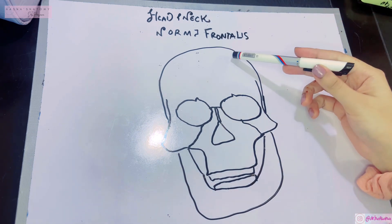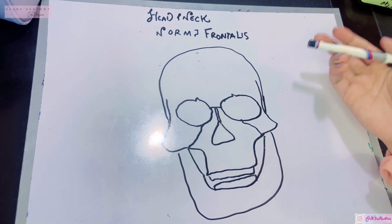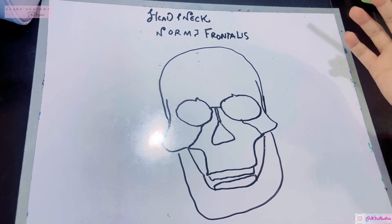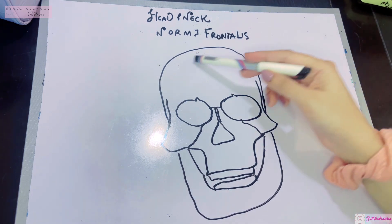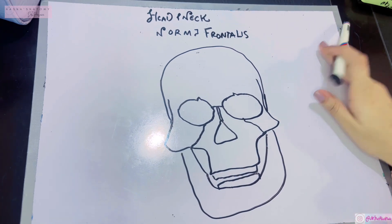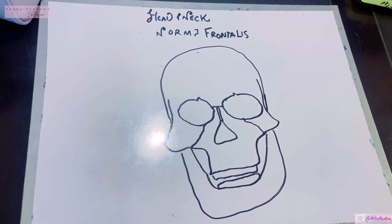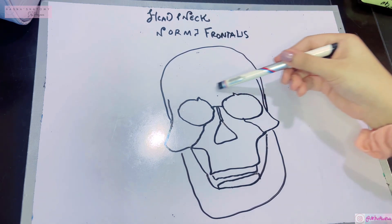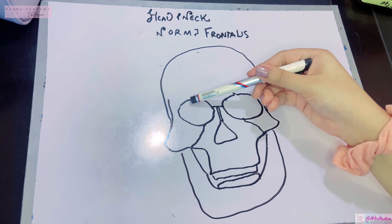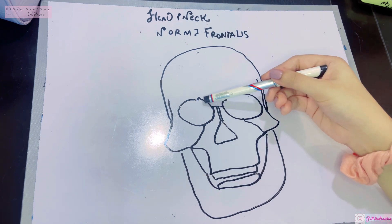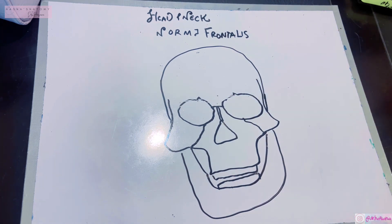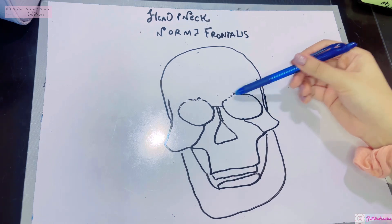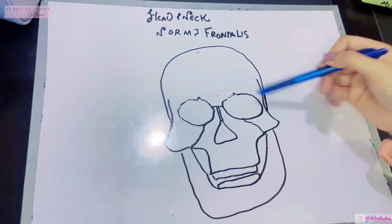We're talking about the anterior view of the skull — basically the face. The important bones you're going to see are firstly the forehead bone, known as the frontal bone. The frontal bone inferiorly is interrupted by the superior margins of the orbit.